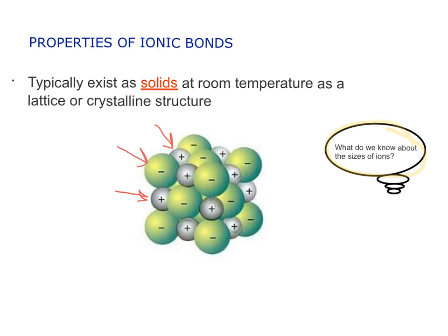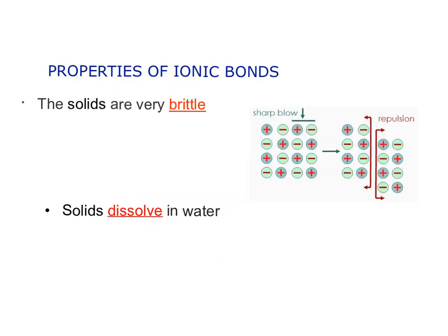Anions are bigger because each electron feels fewer pulls from the protons since there are more negative electrons than protons. Ionic compounds are very brittle because you have alternating positive and negative charges in electrostatic attraction. If a sharp blow misaligns those charges, you end up with positive-positive or negative-negative adjacency, and like charges repel each other.